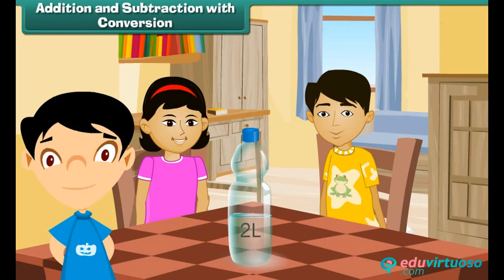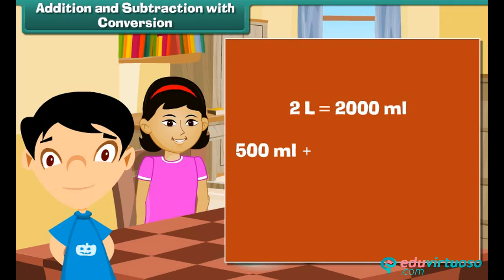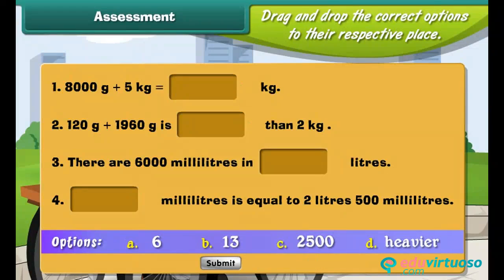Addition and subtraction with conversion: Soha's water bottle holds 2 liters of water. Soha drank 500 milliliters and her friend Govind drank 700 milliliters. Total water is 2 liters, which equals 2000 milliliters. Total consumed is 500 plus 700, which is 1200 milliliters. Water left equals 2000 minus 1200, which is 800 milliliters. Drag and drop the correct options to their respective place.